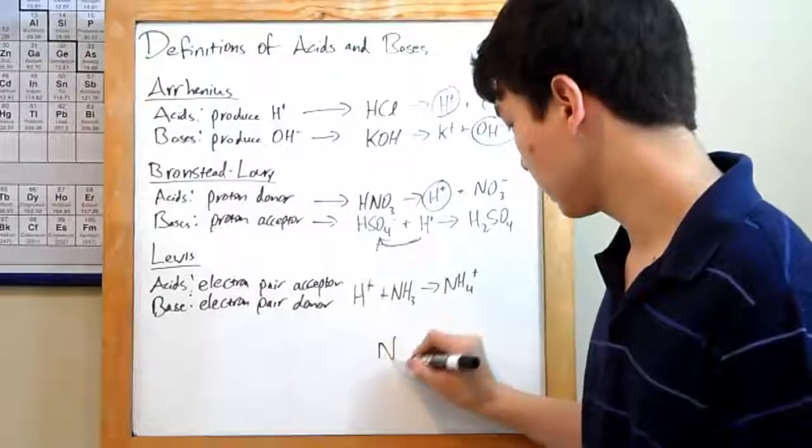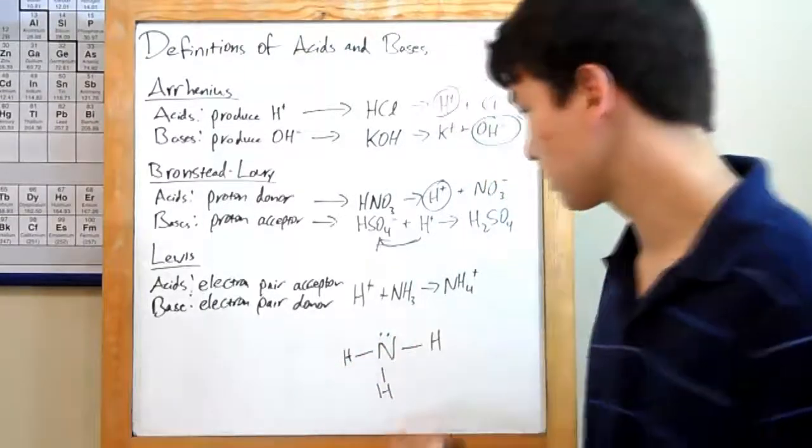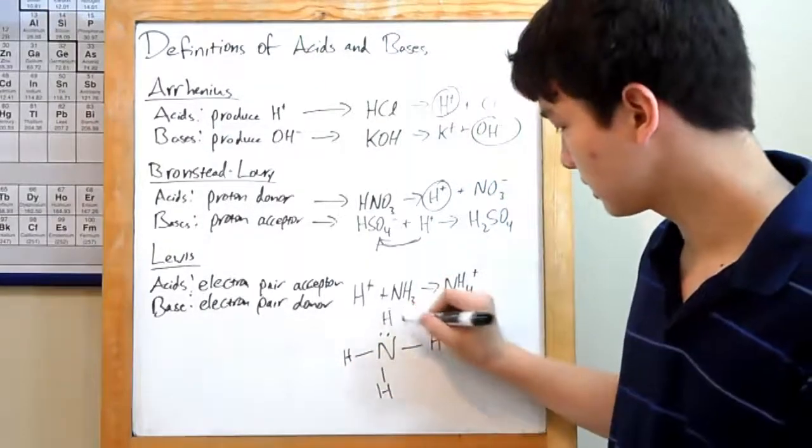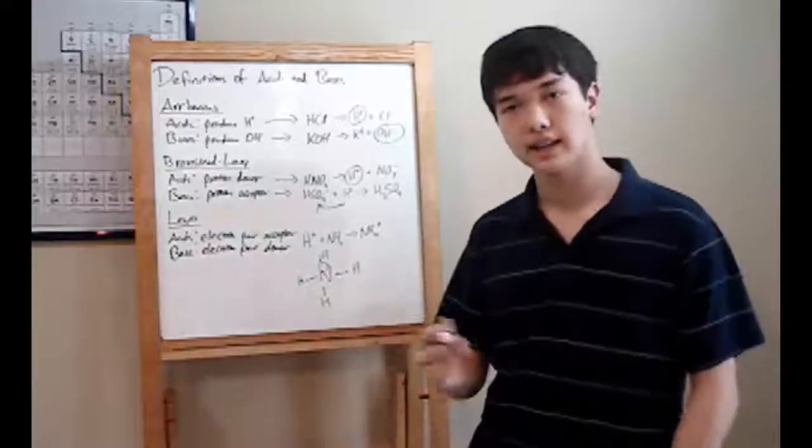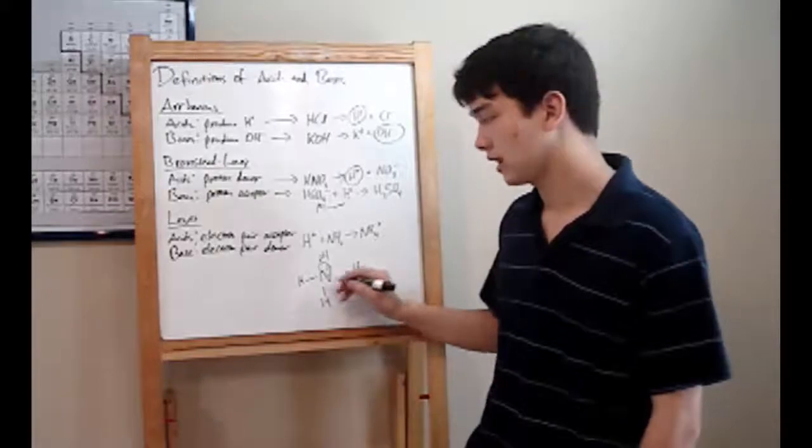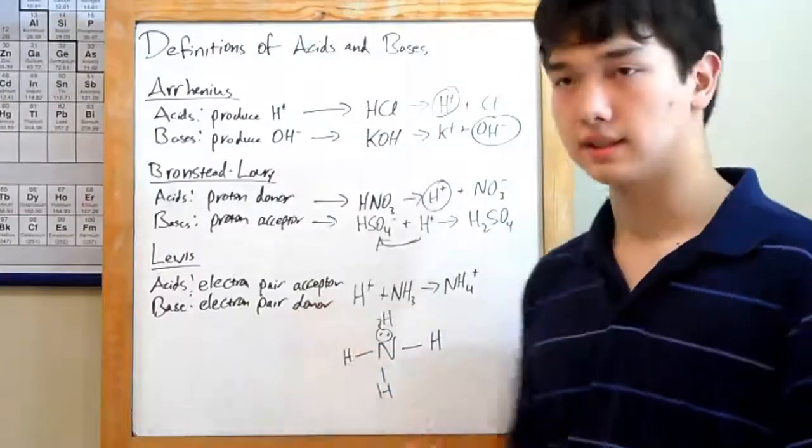Well, NH3 looks like this, with a lone pair over here. When you bring in your H plus, the H plus will accept the electron pair, taking it away from the NH3. And NH3 will be giving it up, making NH3 the donor and the H plus the acceptor.